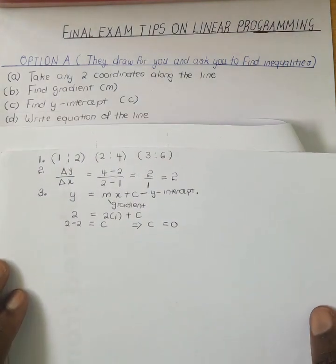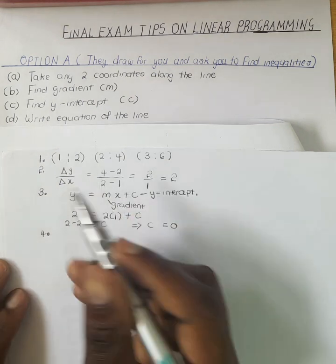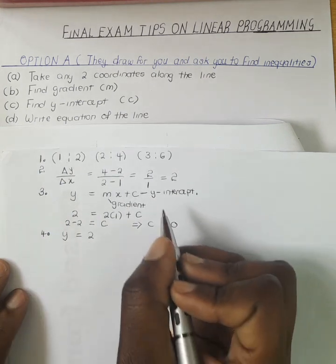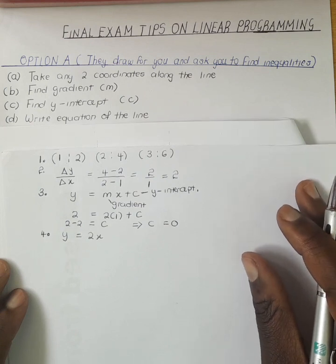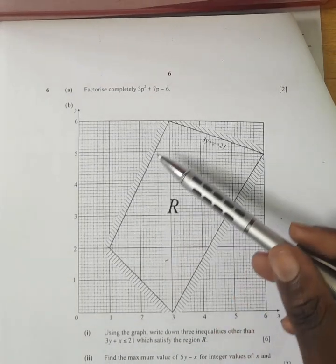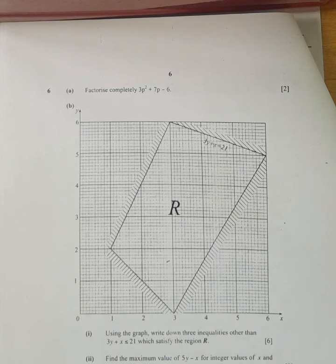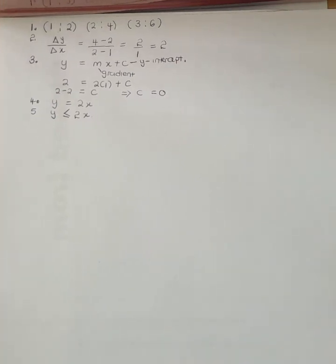Now that we have found our Y intercept, we write the equation of the line — that is stage 4. Y equals 2X, since C equals 0. And then finally, we write down the inequality. The equation of this line is Y equals 2X. We can see that the region that is shaded is above, so the region that we want is below. So we write Y is less than or equal to 2X. This is one of the inequalities defining region R.